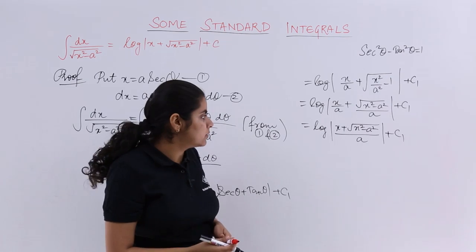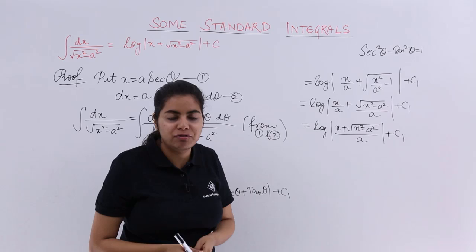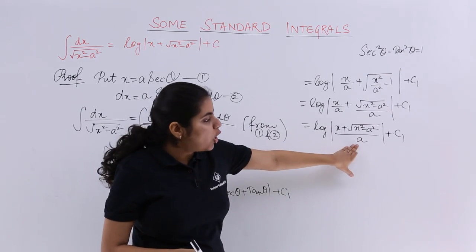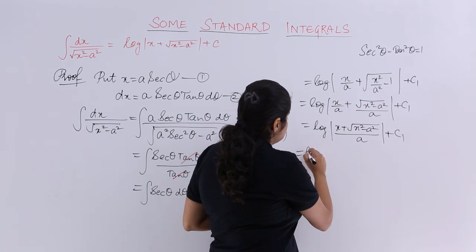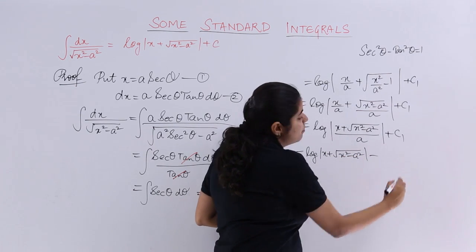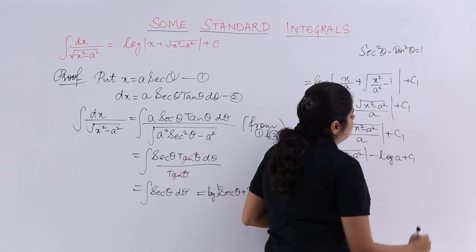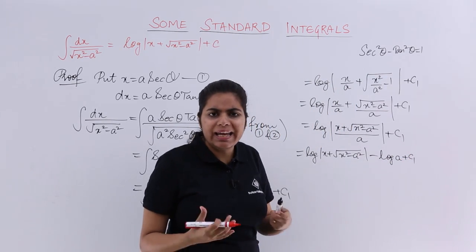Last but not the least step should be what? See log x plus under root x square minus a square is full and final, and upon a. Let's separate the things. I have log m upon n as log m minus log n. So it is minus log a plus c1. Now log a is also what? It is constant.